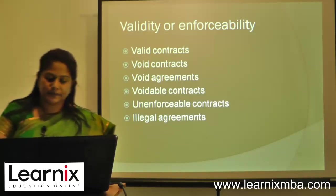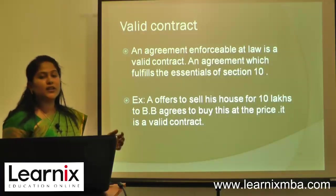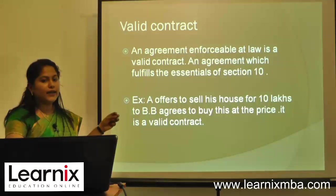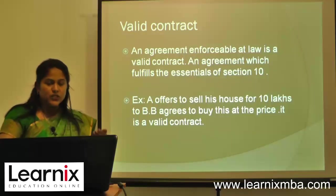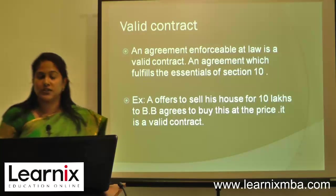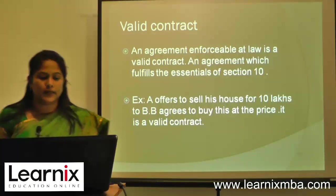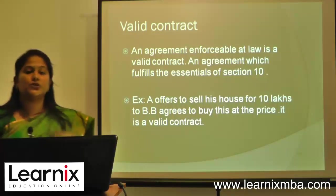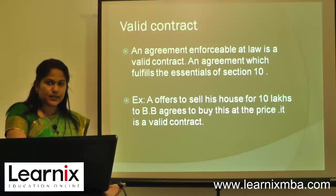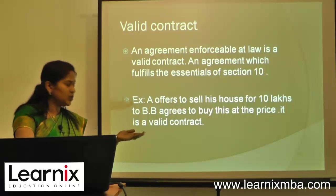A valid contract: an agreement enforceable at law is a valid contract — an agreement which fulfills all the essential conditions stated in Section 10 of the Contract Act. For example, A offers to sell his house for 10 lakhs to B, and B agrees to buy at that price. It is a valid contract because there is valid consideration and proper consent.